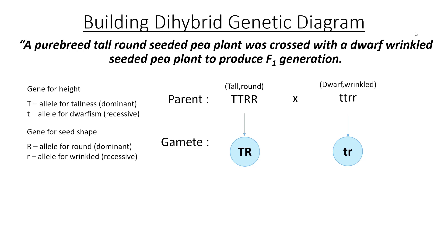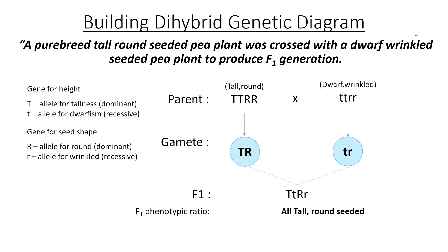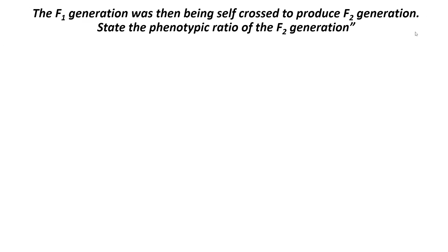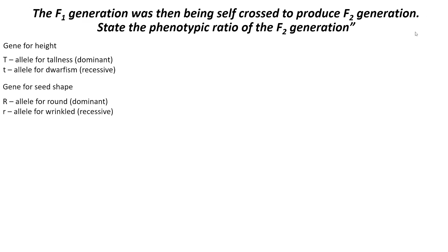Therefore you just write down one arrow only. As you can see, all the F1 generation will have dominant phenotypes — in this case being tall and round-seeded — however they will be heterozygous. Let's imagine the situation requires us to do a self-cross on the F1 offspring. Self-cross refers to crossing between individuals of the same generation, so it's the F1 offspring crossed with another F1 offspring.